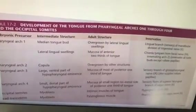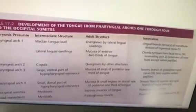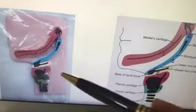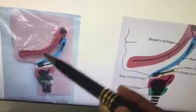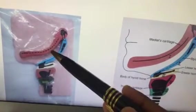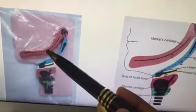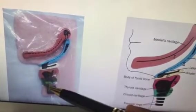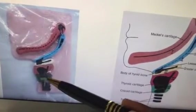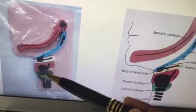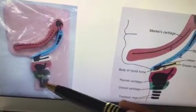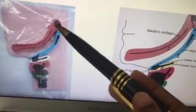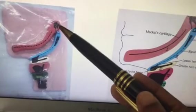The student should know all the derivatives. For pharyngeal arches: the first arch is associated with the mandibular nerve, the second arch with the facial nerve, the third with the glossopharyngeal, the fourth with the superior laryngeal nerve, and the sixth with the recurrent laryngeal nerve. The fifth arch disappears.